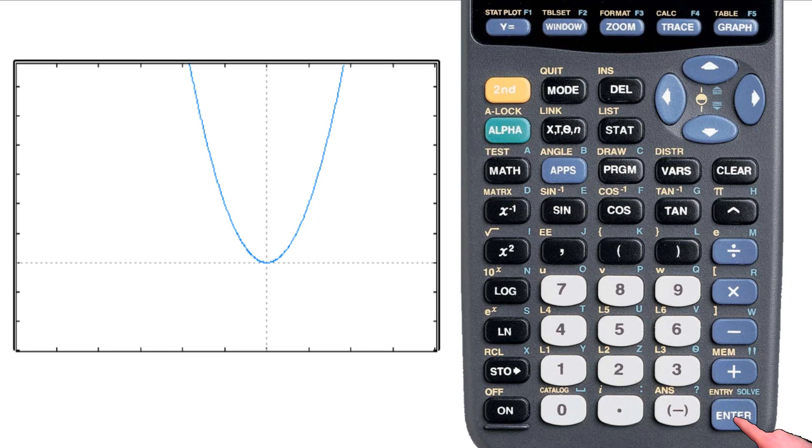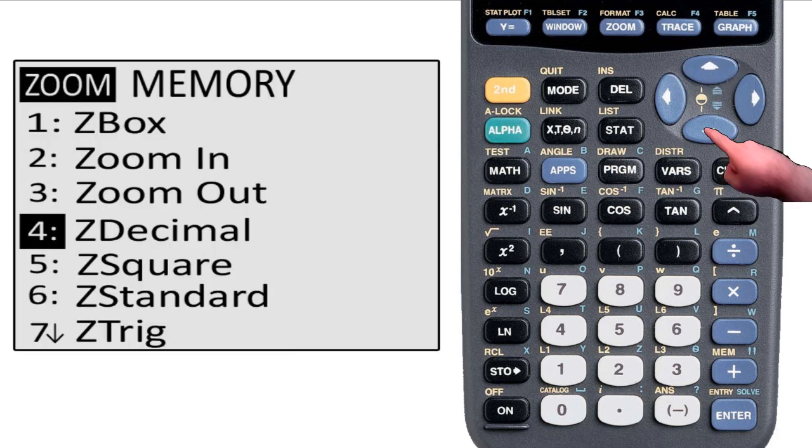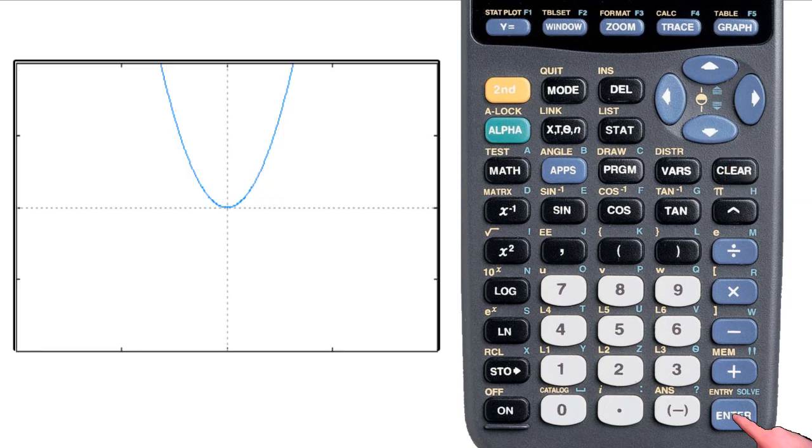Okay, so now I'm done with my zooming fun. So I want to reset it back to the way it was. So I go back to the zoom menu and I hit Z standard. This time it doesn't give me a cursor. It just resets the settings back to the default.